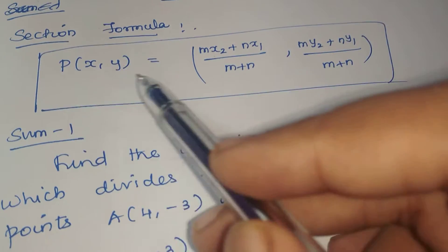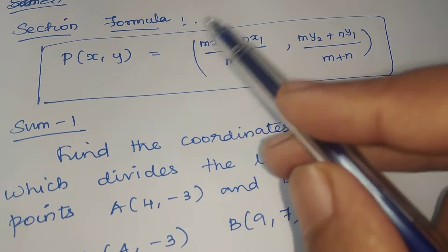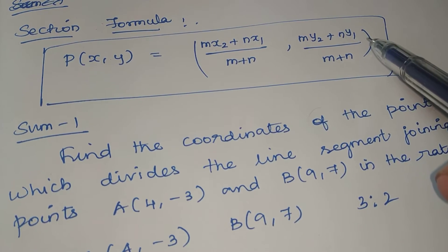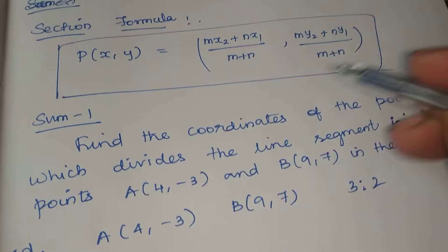We will see the section formula. P(x,y) equals (mx2 plus nx1) divided by (m plus n), and (my2 plus ny1) divided by (m plus n). That's what we use in the section formula.